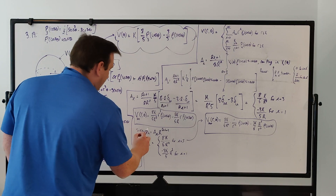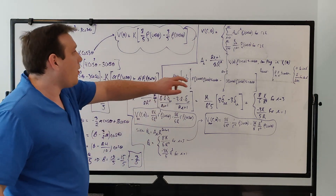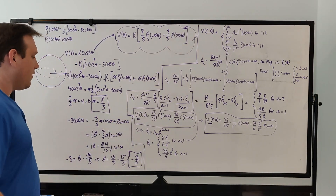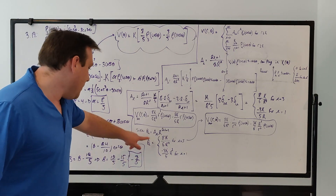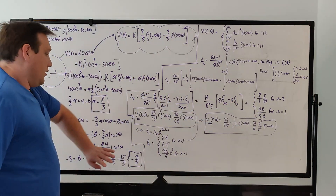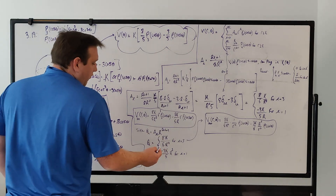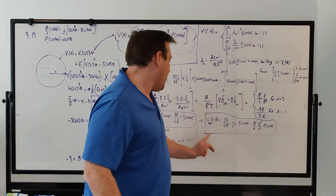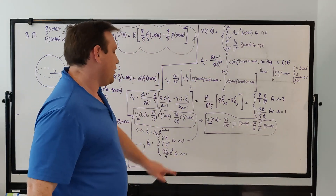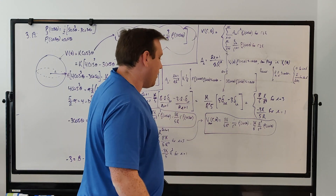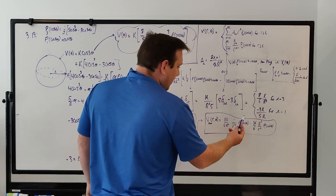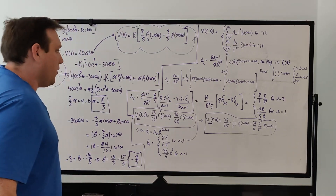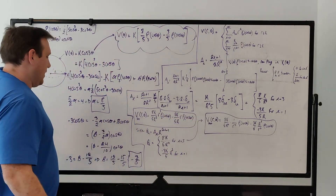For the outside potential, it's derived in the book that b_l = a_l · R^(2l+1). Plugging in our coefficients: b₃ = 8K/(5R⁴) and b₁ = -3K/(5R²). Substituting into the exterior summation gives V_outside = (8K)/(5R⁴) · (1/r⁴) · P₃(cosθ) minus (3K/5) · (R²/r²) · P₁(cosθ). That gives us the potential both inside and outside the sphere.